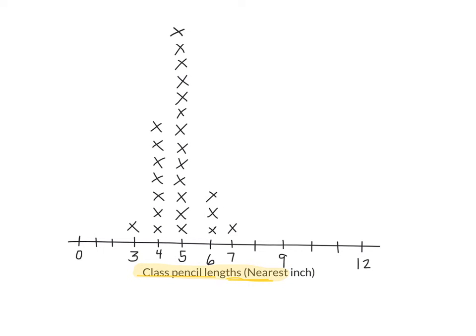What is the shortest pencil we have in our class right now? Three inches. What's the longest pencil people are using right now? Seven inches. What is the most common measurement? Five inches. So again, we can see we've now made a line plot.